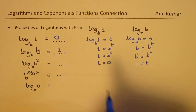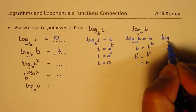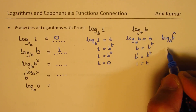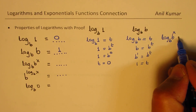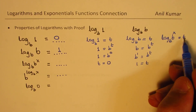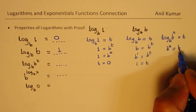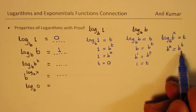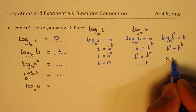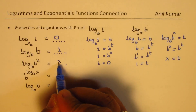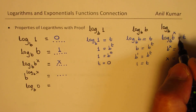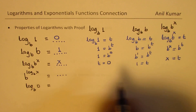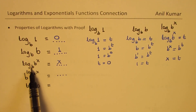Now let us take the third one: log to the base b of b to the power of x. Let this be t. Writing in exponential form: b to the power of x equals b to the power of t. Since the base is the same, the exponents must be equal, so x equals t, and we get x as the result. So log to the base b of b to the power of x equals x. This is a kind of power rule.